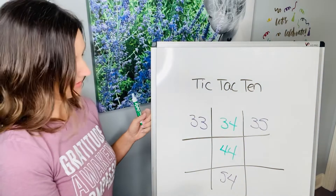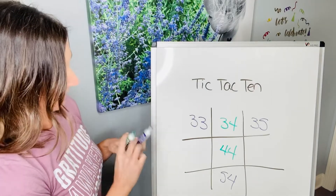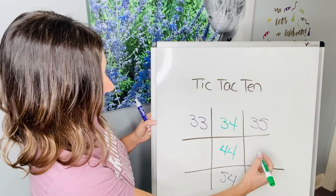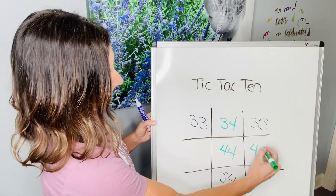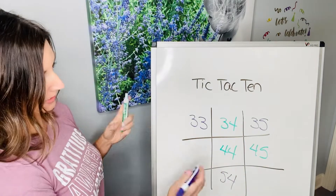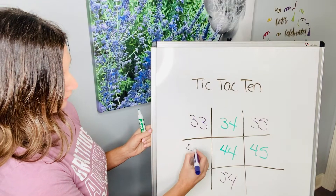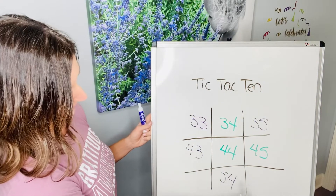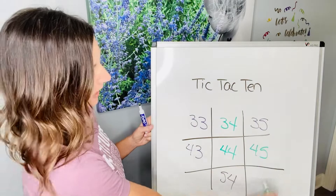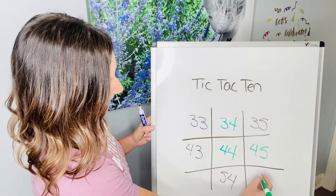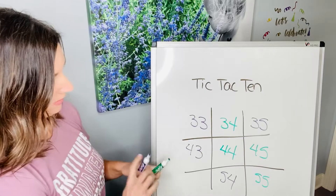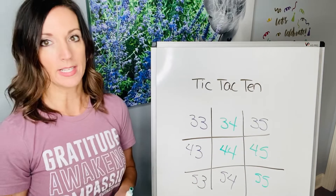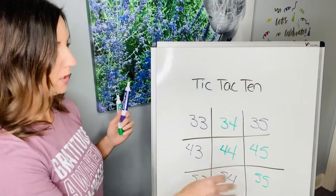Do you see how they go up by 10s? Then they could go here and do 45. I'll block them here with a 43. No one's going to win this game because I'm playing myself — that's fun. They could go here and get 55. I can go here and get 53.